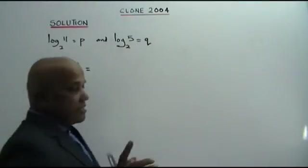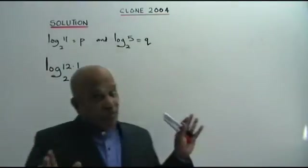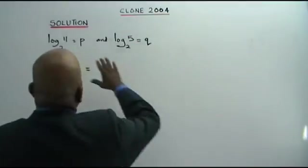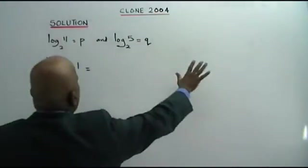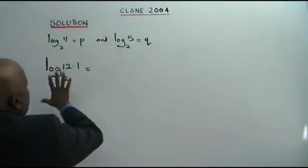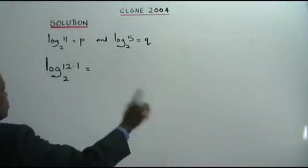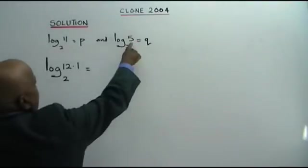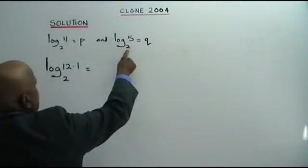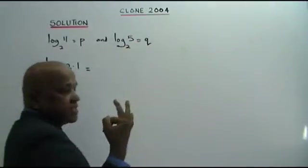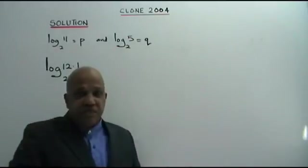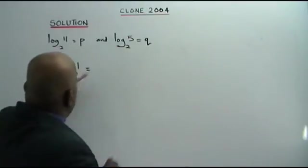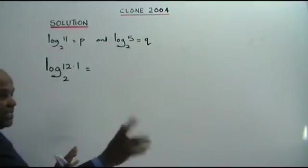Now the secret to answering this type of question is this. When you are given like this, you break the number given into 11, 5, and the base 2. These are the three important numbers you must break this into. Let's see how we do it.